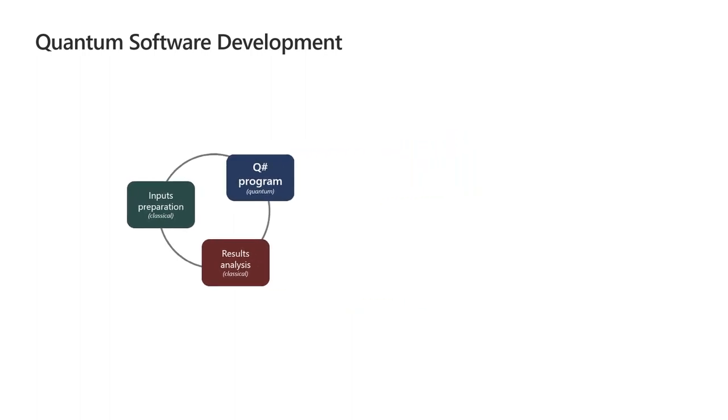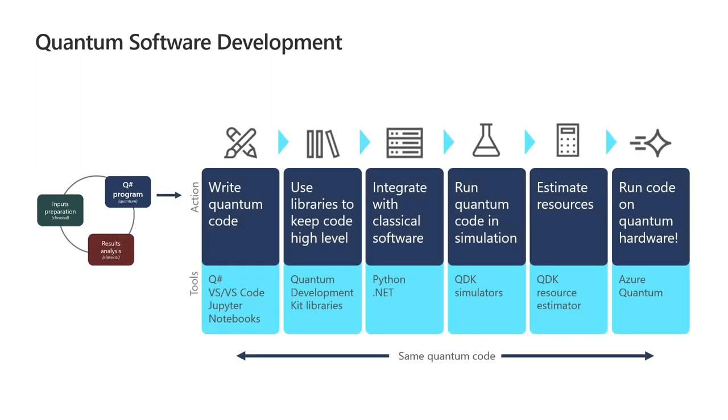In more detail, our workflow looks something like this. We start, of course, by writing the quantum code using Q#, our domain-specific programming language. And to do this, you're going to use Visual Studio, Visual Studio Code, the editors you're using daily anyways. Our quantum development kit libraries help you keep your code at high level and help you make writing your quantum program as easy as possible.